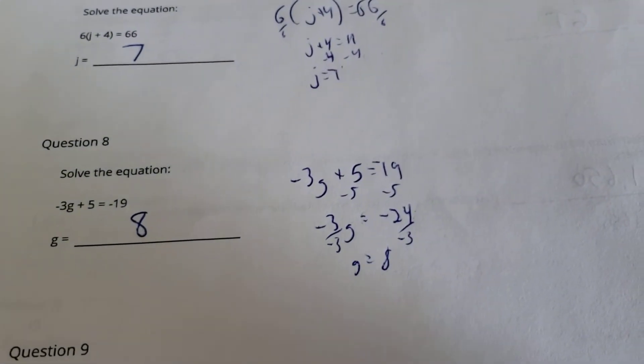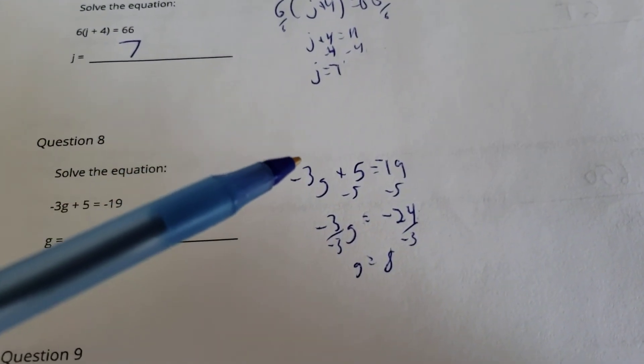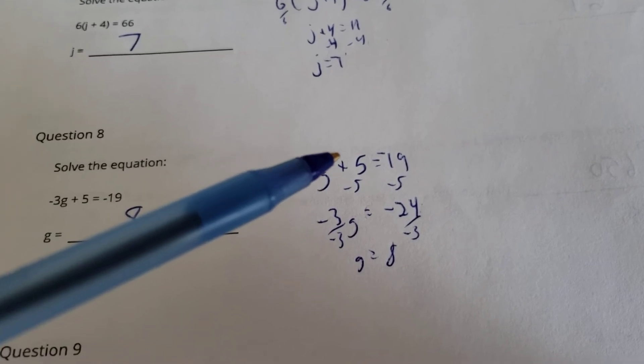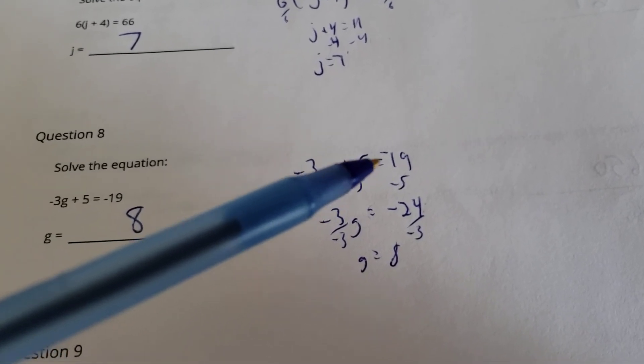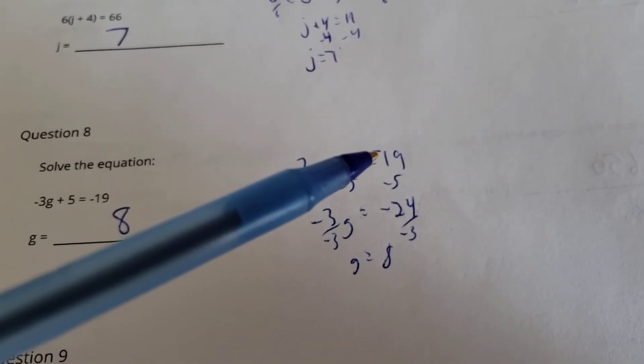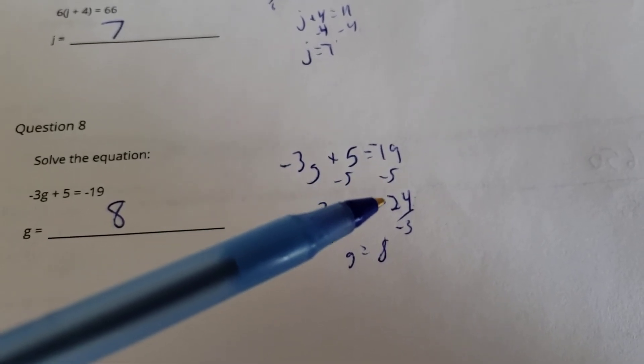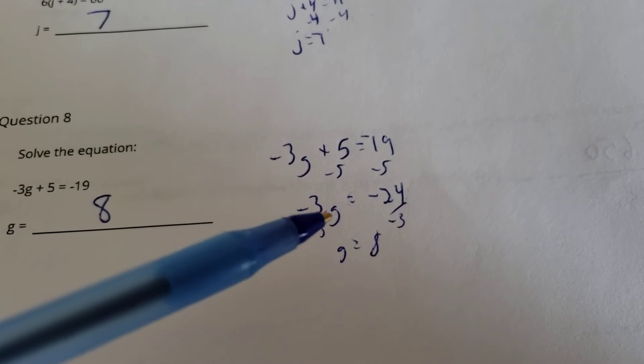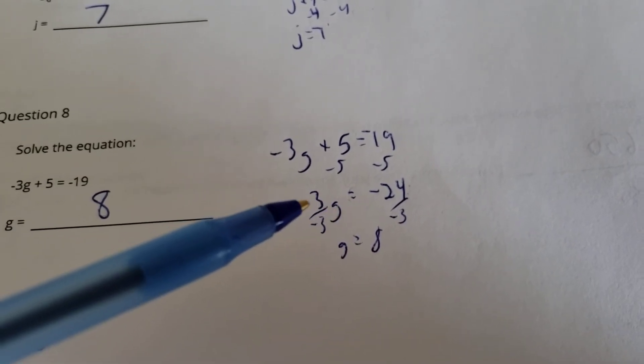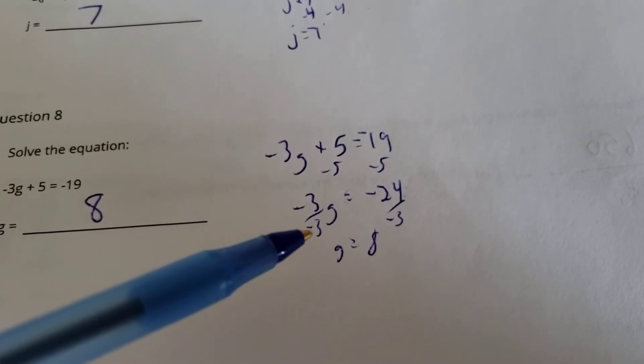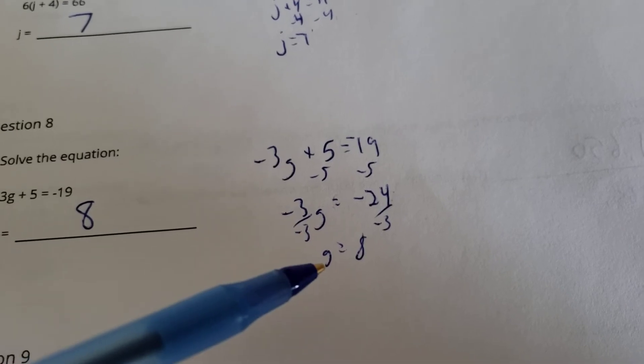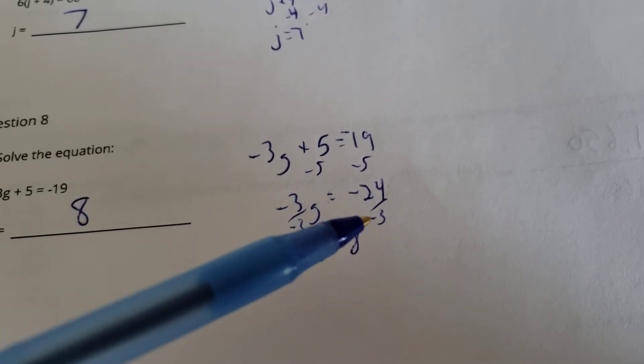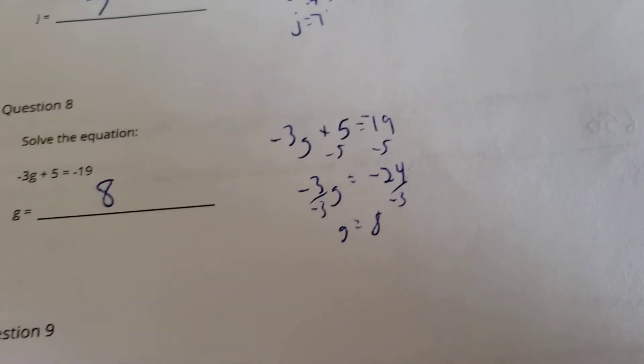Number 8. We have negative 3G plus 5 equals negative 19. I get rid of this plus 5 here by subtracting 5, subtracting 5. A negative 19 minus 5 does give you a negative 24. And then I got a negative 3 times G. I don't want the times negative 3 anymore, so I divide by a negative 3. It clears out to just a G. Negative by negative is positive. And 24 divided by 3 gives us an 8.